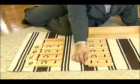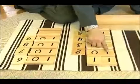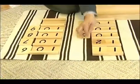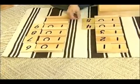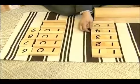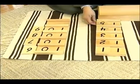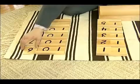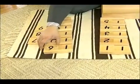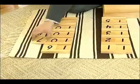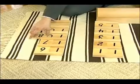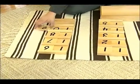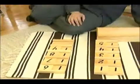Ten and one is eleven. Ten and two is twelve. Ten and three is thirteen. Ten and four is fourteen. Ten and five is fifteen. Ten and six is sixteen. Ten and seven is seventeen. Ten and eight is eighteen. Ten and nine is nineteen. And that's how you present the teen boards.